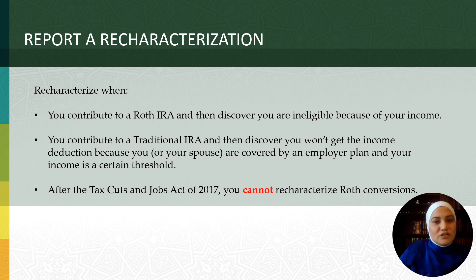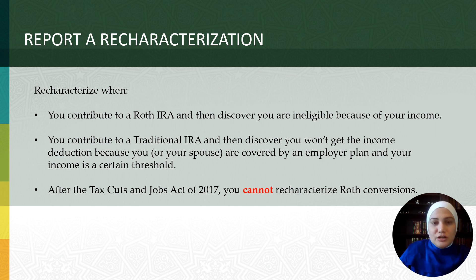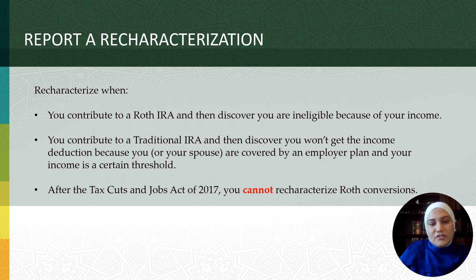This essentially means transferring the initial contribution plus earnings to a traditional IRA. If this is done by the due date for filing your tax return — including extensions — you can treat the contribution as made to the second IRA for that year, meaning you can ignore your mistake. The same thing is true if you contribute to a traditional IRA and then realize it won't be deductible for your income — for example, you discover that you or your spouse are covered by a 401k at work, even if you are not participating in it, and your income exceeds the IRS threshold.